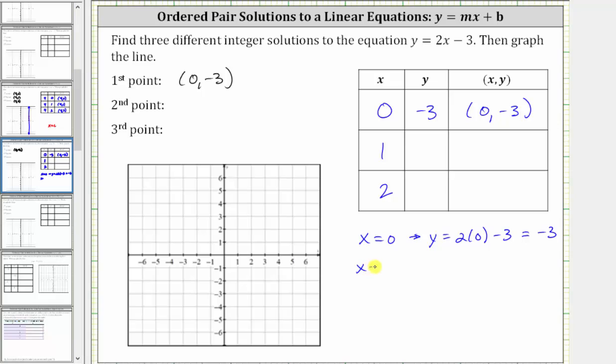Next, when x equals 1, y must equal 2 times 1 minus 3. Two times 1 is 2. Two minus 3 is negative 1. The ordered pair (1, -1) is a solution. It's also a point on the graph.